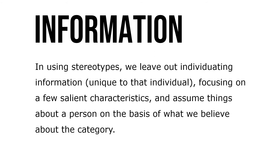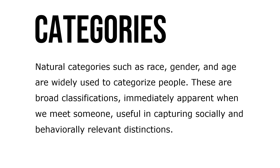In using stereotypes, we leave out individualizing information unique to that individual, focusing on a few salient characteristics and assuming things about a person on the basis of what we believe about the category. Natural categories such as race, gender, and age are widely used to categorize people — these are broad classifications immediately apparent when we meet someone, useful in capturing socially and behaviorally relevant distinctions.